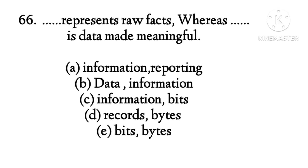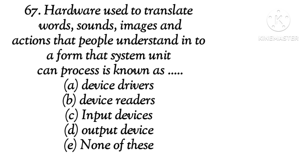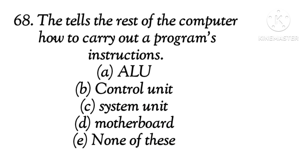Question 65: Manipulating data to create information is known as the right answer is C, processing. Question 66: Dash represents raw fact whereas dash is data made meaningful. The right answer is B, data and information. Question 67: Hardware used to translate words, sounds, images and actions that people understand into a form that the system can process is known as the right answer is input, C. Question 68: The dash tells the rest of the computer how to carry out a program's instructions. The right answer is control unit.